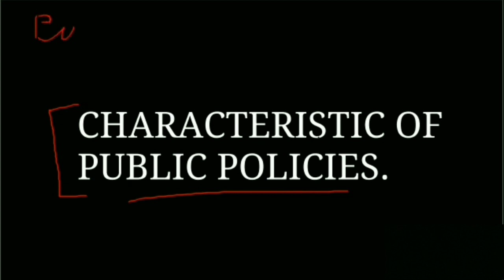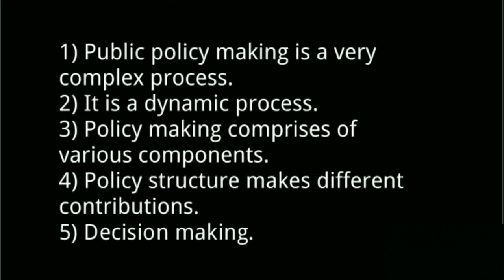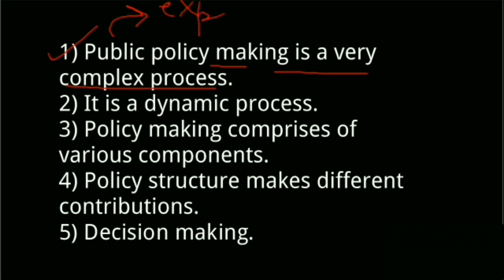The meaning and the nature of public policy will be more clear if we understand these different characteristics. Number one is that public policy making is a very complex process. It involves many components which are interconnected by communication and feedback loops, and the way they interact is very different. Some parts of the process are explicit and directly observable, but many others proceed through hidden channels that officials themselves are often only partly aware of.